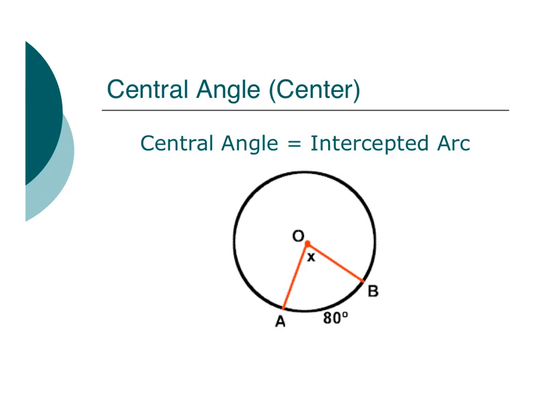This is something we've known for a couple sections now, that the central angle and the intercepted arc are equal to each other. So if the central angle is 80 degrees, the arc is 80 degrees. If the arc is 80 degrees, then the central angle is 80 degrees. They're equal to each other.